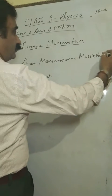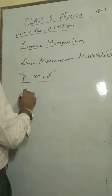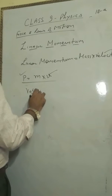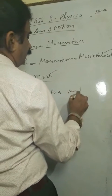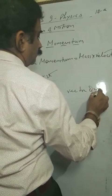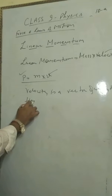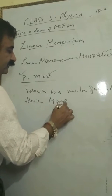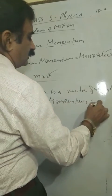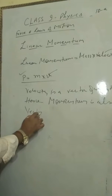Velocity, I am talking about the velocity. Velocity is a vector quantity. So linear momentum is also vector quantity. Hence, momentum is also vector quantity. This is vector quantity.